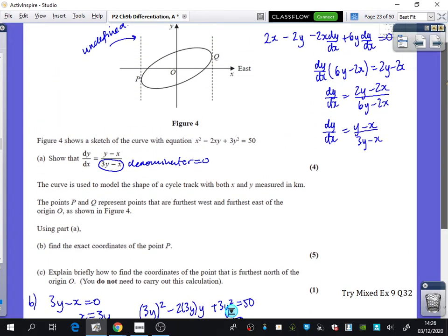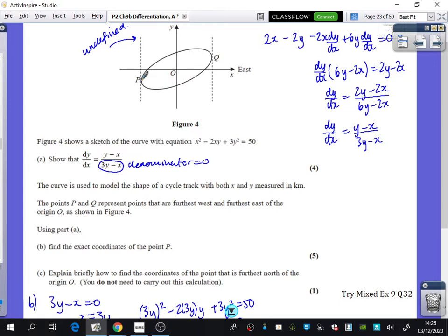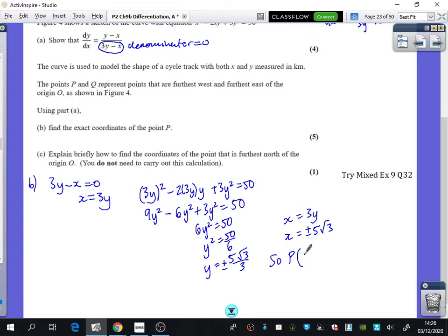So when you look at the P that they want, it has a negative x and a negative y coordinate. So you're going to then say, so P is going to be minus 5 root 3, minus 5 root 3 over 3, as it is in, you don't have to write this bit, but it's in the third quadrant.